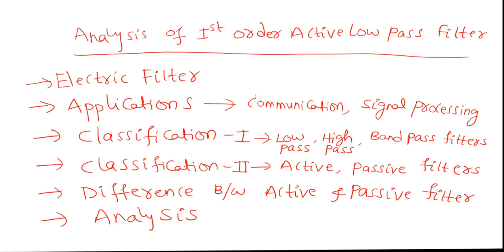Now we are going to see one more classification, done based on what components are used to build the filter. There are two such filter classifications: one is active filter and another one is passive filter. An active filter uses active components in addition to resistance and capacitance — active components like operational amplifiers. A passive filter uses only passive components to build the filter.